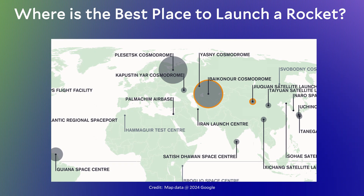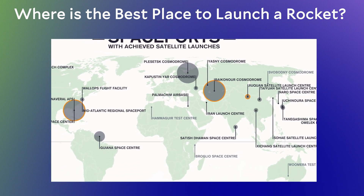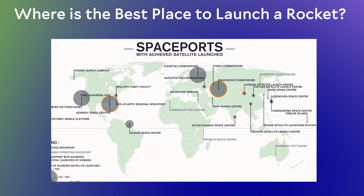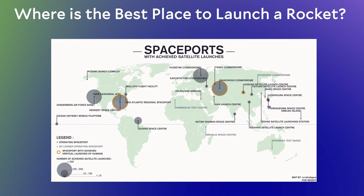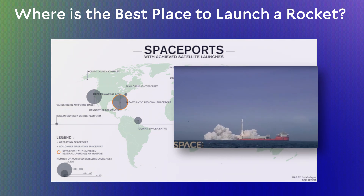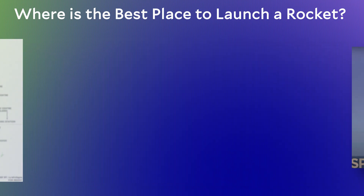While most launch sites want to take advantage of Earth's rotation, some do not. So another idea is to have a mobile platform that you could move around depending on the particular need of a satellite. For example, China has converted a floating barge which can launch rockets from the ocean. This platform recently launched a four-stage rocket carrying nine different satellites into orbit, with the idea being that the platform can be moved closer or further from the Earth's equator as needed.